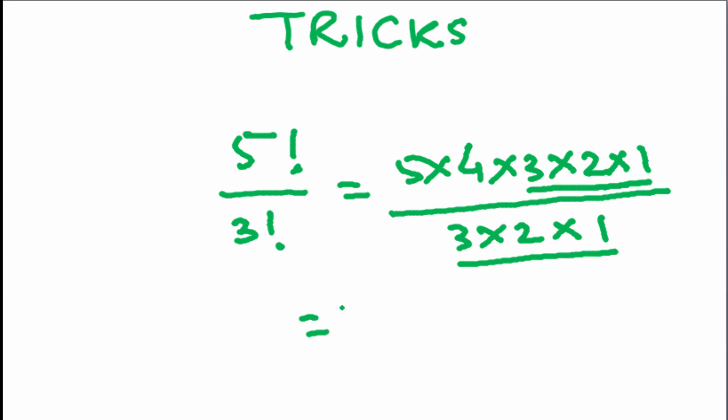So we can write it as 5×4×3 factorial divided by 3 factorial, which will give you 5×4. These two will cancel out, which is equal to 20.